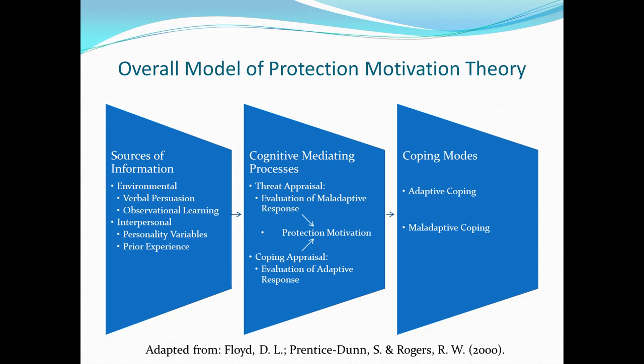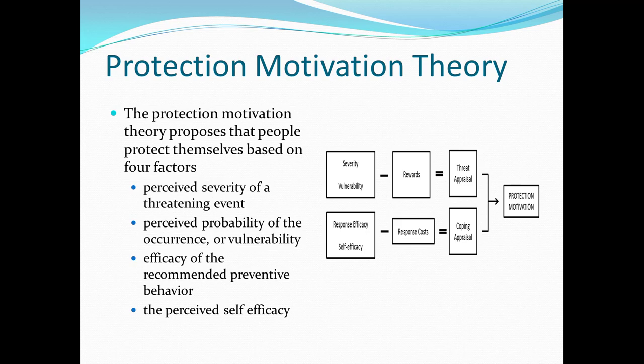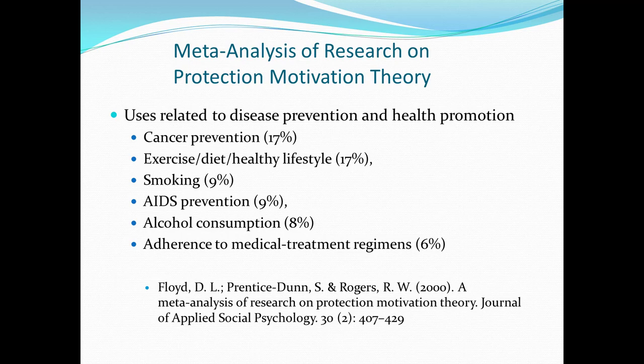These can lead to coping modes that include adaptive coping or maladaptive coping. A key subcomponent of the protection motivation theory is its proposition that people protect themselves based on four factors: the perceived severity of a threatened event, such as a car accident or development of coronary artery disease; the perceived probability of occurrence or individual vulnerability; the efficacy of a recommended preventive behavior, such as a lifestyle modification; and perceived self-efficacy — how confident one feels about following through with the recommended preventive behavior.